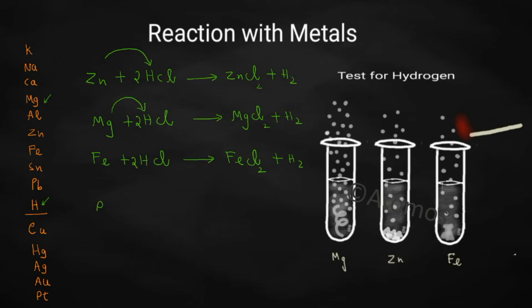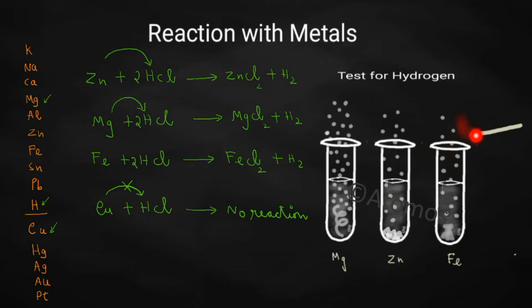Now write one more reaction. You are taking a little bit of copper and adding hydrochloric acid into that. Some people will jump and write copper chloride and hydrogen, but that reaction won't be taking place. Check the position of copper in the reactivity series - it is below hydrogen. Metals present below hydrogen in the reactivity series, like copper, mercury, silver, gold and platinum, are incapable of displacing hydrogen from the acid. So copper will not react with dilute acid - you should write no reaction. Along with this, remember one test for hydrogen: whenever gas is evolving out of the test tube, show a glowing splint at the mouth of the test tube. If it is hydrogen gas, you will hear a pop sound.